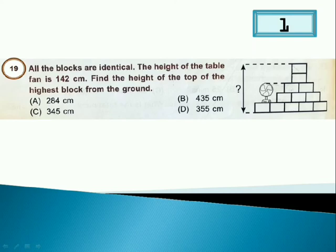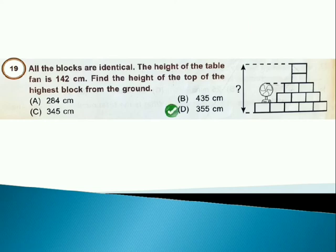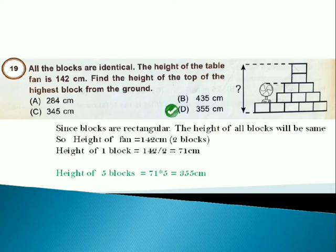Answer is option D. Since blocks are rectangular, the height of blocks will be same. So, height of fan is 142 cm. That is 2 blocks. Height of 1 block is 142 by 2. That is 71 cm. So, height of 5 blocks is 71 times 5 is 355 cm.